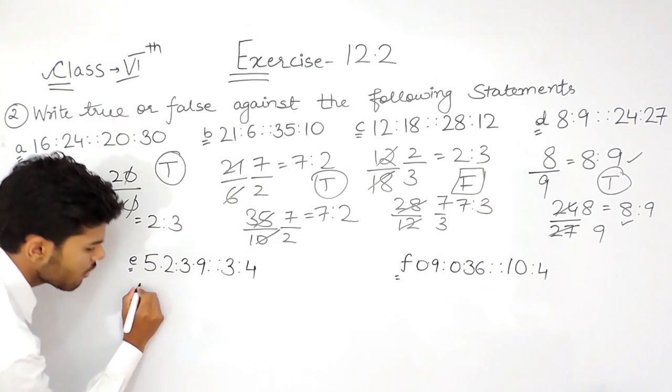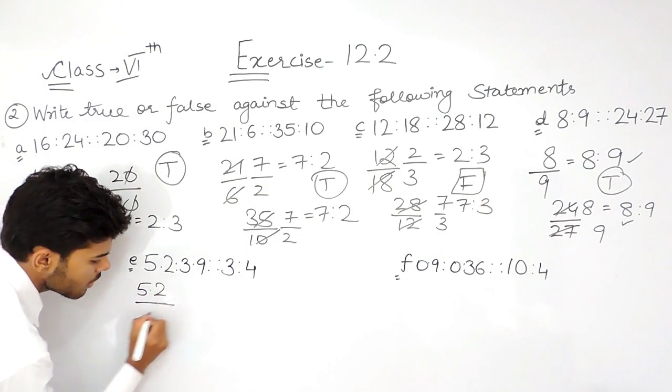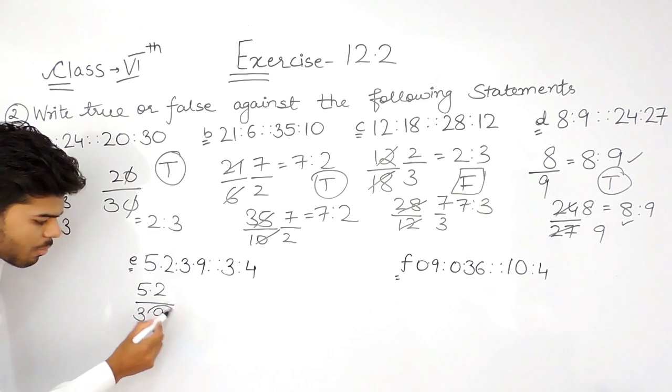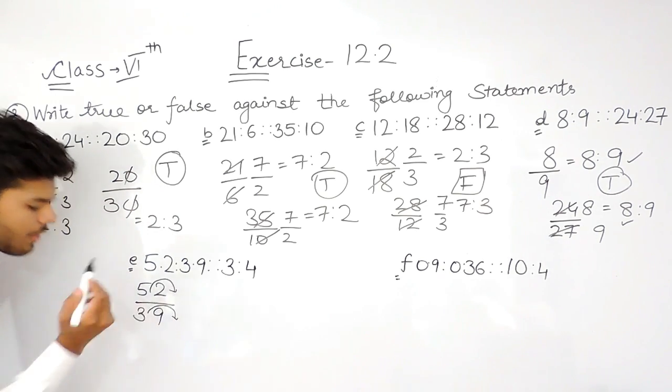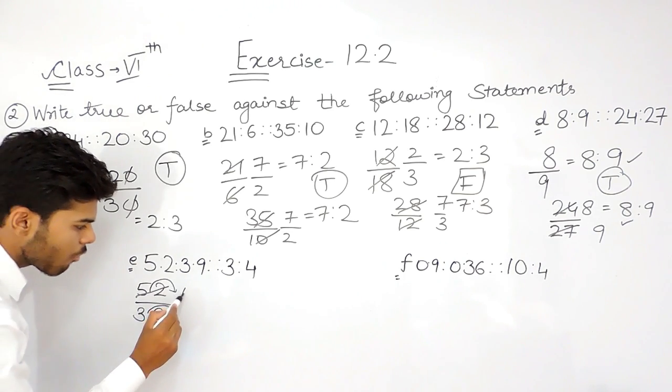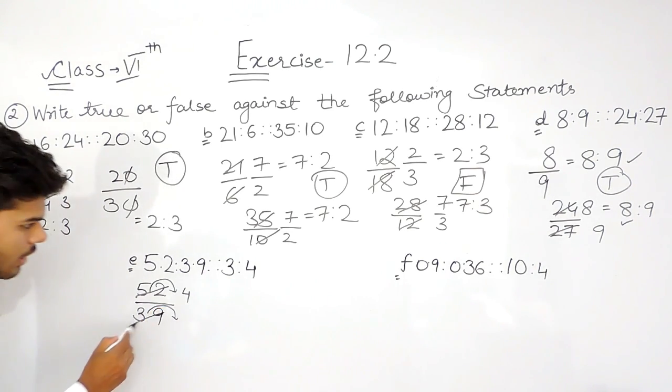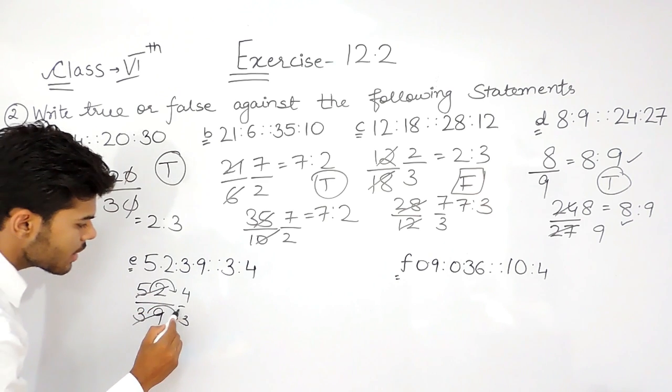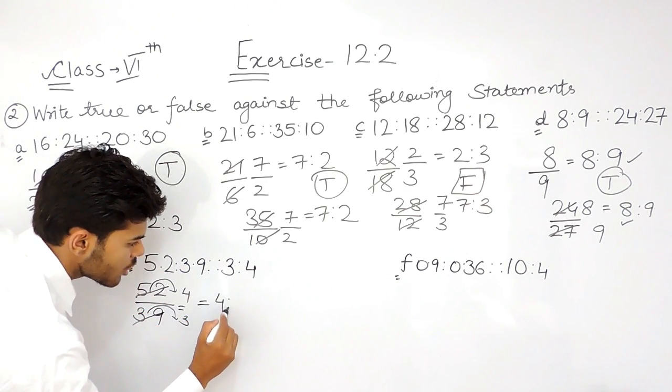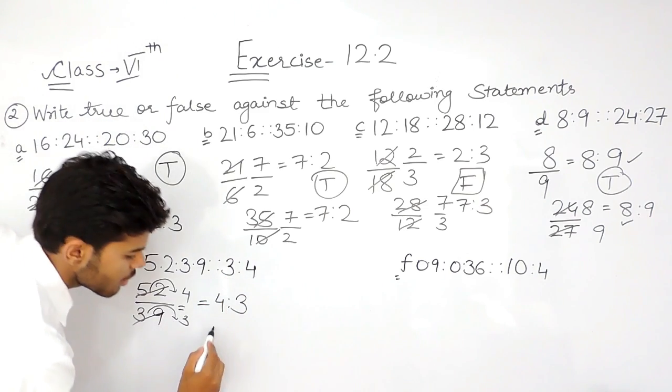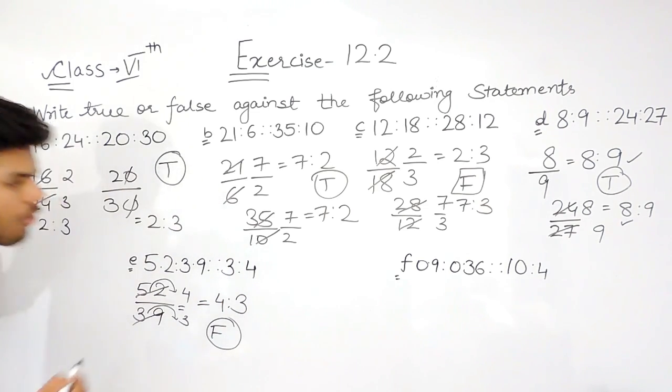Now 5.2 ratio 3.9. The decimal point gets shifted. This also gets shifted. 4 times 13 is 52, 3 times 13 is 39. So this comes out to be 4 ratio 3. But this is 3 ratio 4. So this statement is false.